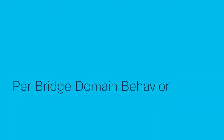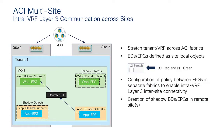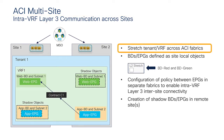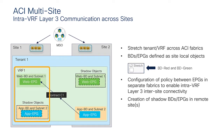Let's look at how to establish layer 2 and layer 3 flexible connectivity between sites based on per-bridge domain behavior configured on the Multisite Orchestrator. Objects defined in a template can be pushed to specific or multiple sites. The first use case is intra-VRF layer 3 communication across sites, requiring a stretched VRF, with local EPGs and bridge domains for web in Site 1 and app in Site 2, each assigned to different templates.